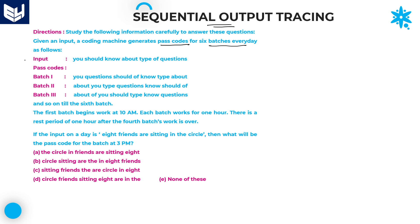The batches and passcodes are given as input - batch 1, batch 2, batch 3. The process takes all these batches into consideration until the sixth batch, but here it is given up to only the third batch. We need to write up to six batches. The input is a, b, c, d, e, f, g - I am considering each word as a single letter, total seven words.